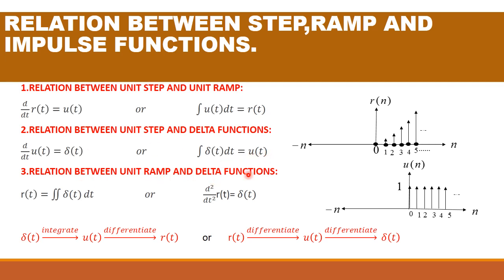Next, the relation between unit ramp and delta function: d²/dt²·r(t) = δ(t). Differentiating r(t) once gives u(t); differentiating again gives δ(t). Conversely, r(t) equals the double integral of δ(t) dt. A simple mnemonic to remember: R, S, I — where R stands for ramp, S stands for step, and I stands for impulse. Moving from R to S to I requires differentiation; moving in reverse requires integration.